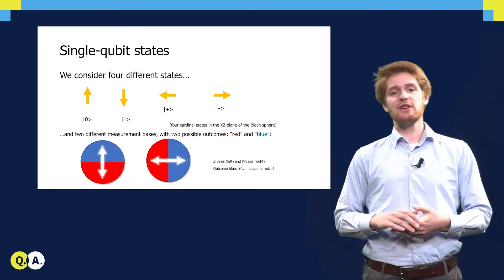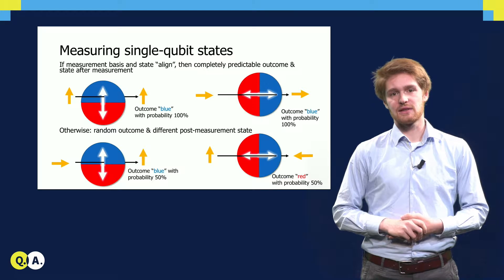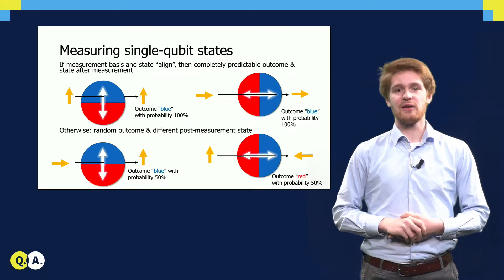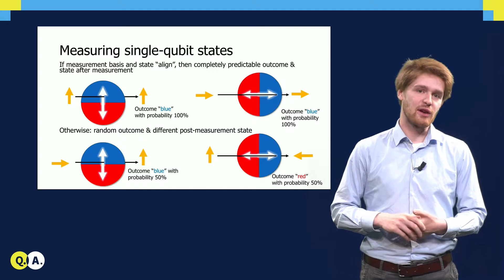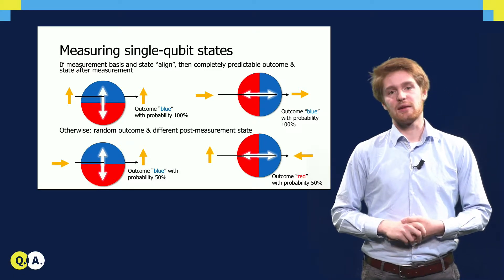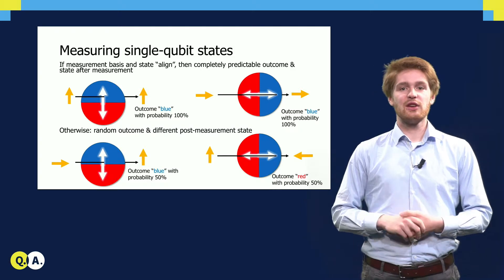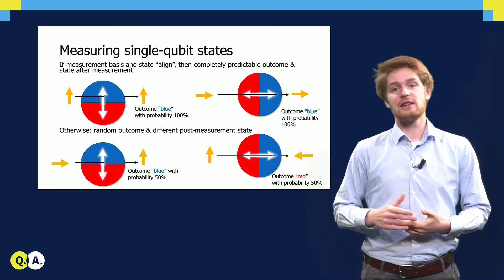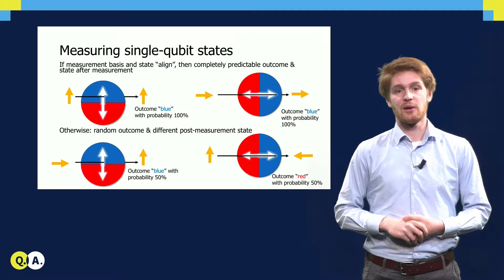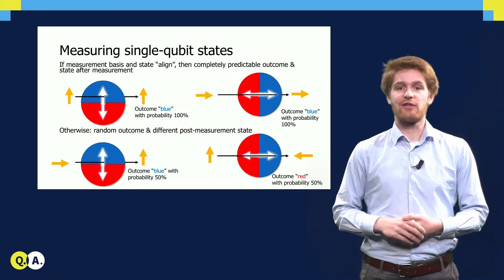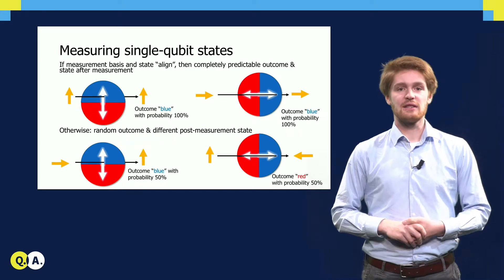Let us do a short recap of measuring single qubit states. Suppose we have a qubit, a yellow arrow, and a measurement basis, the round states, and now we measure the qubit in the basis. Then if the state of the qubit aligns with the measurement basis, only a single outcome is possible. Moreover, the state of the qubit does not change, and from the measurement outcome we learn its state.